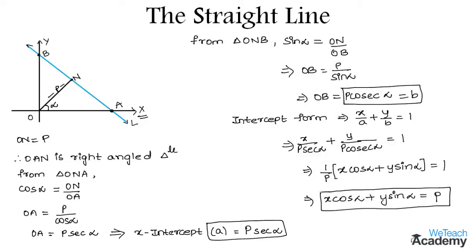So this is the equation of a straight line in normal form, where P will be greater than or equal to 0 and alpha lies between 0 and 2π.